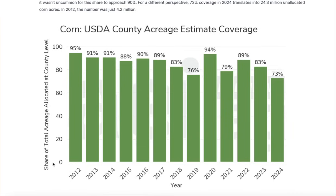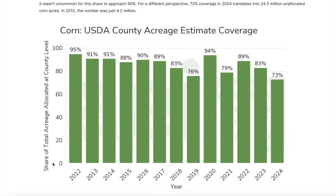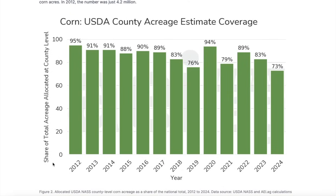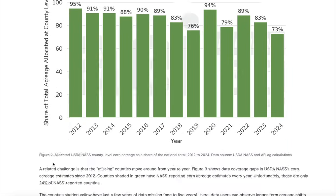Those that weren't allocated — the remaining 20-plus percent — were reported as an other or combined county, and that came to about 24 million corn acres that year. So a lot of acres are not allocated. There's the single-year question of where these acres are going, but there's also a multi-year issue.